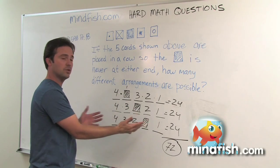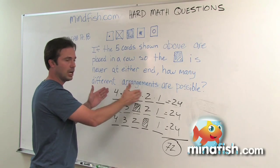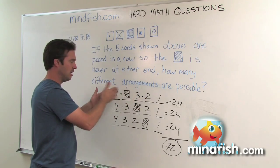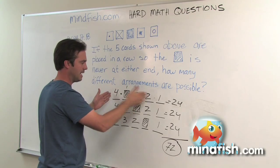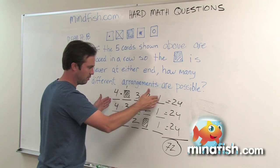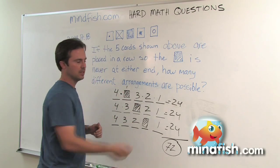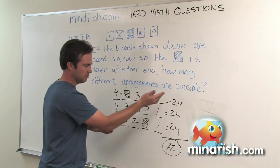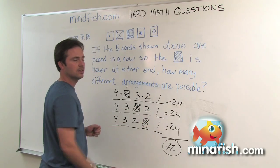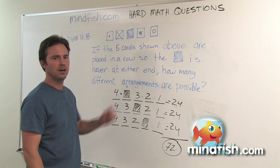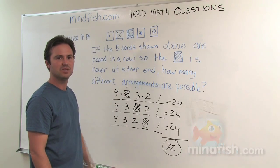So again, you notice I drew a picture essentially. I thought about each decision: if the choices were happening in 'ands' — as if I have to do them all — I multiplied. Then I added across because these were the three options; it was this or this or this. I hope to see you again soon in one of our hard math videos or over at Mindfish.com. Thanks.